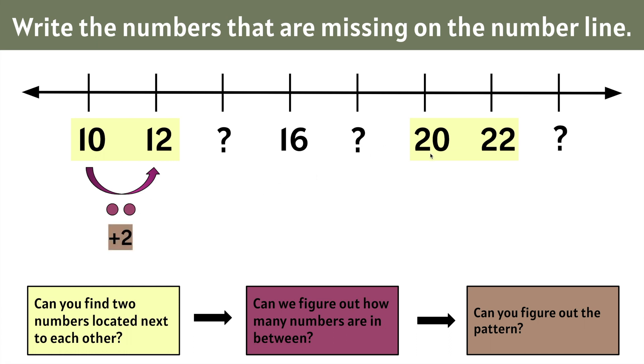Let's check from 20 to 22. Remember 20 on your head, 21, 22. We notice that we added 2 again. That means that the pattern for this number line is going to be add 2 each time. Now that we know that the pattern for this number line is add 2, we can figure out the missing numbers.